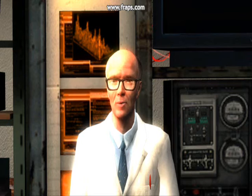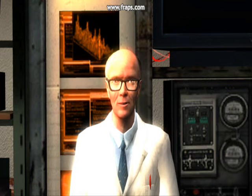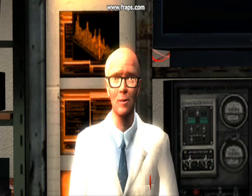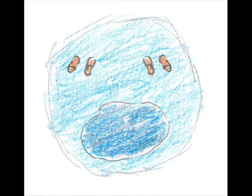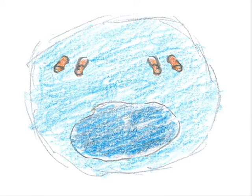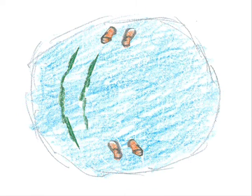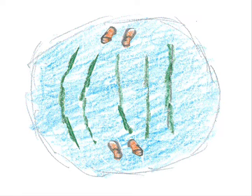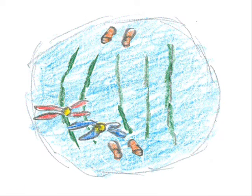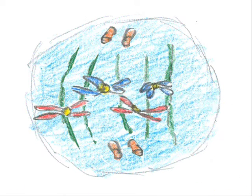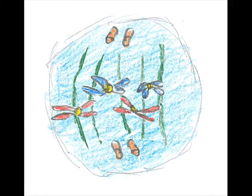The next stage of mitosis is metaphase. During metaphase, the chromosomes inside the cell line up across the cell, and each chromosome attaches to a spindle fiber at the centromere, which holds the chromatids together.